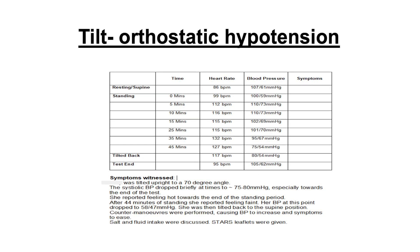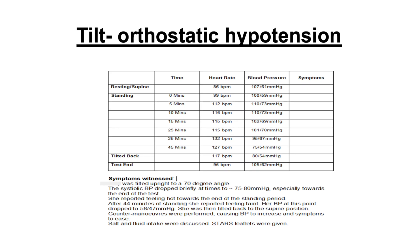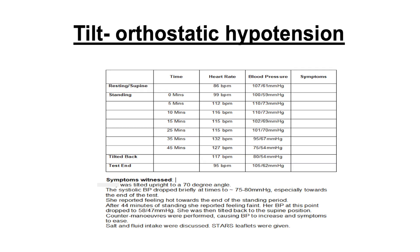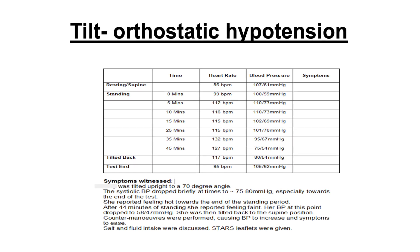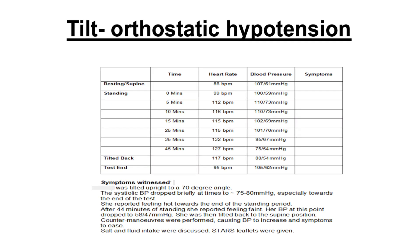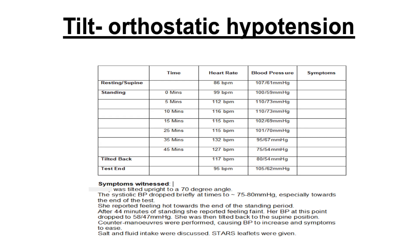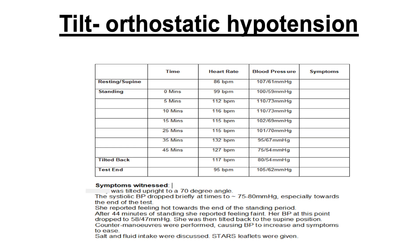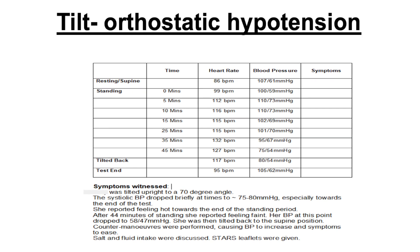This is a lady who came to us from the chronic fatigue service and had been told she had chronic fatigue and that dizziness was part of her symptoms and she had to put up with it. You might think she could get a diagnosis of POTS — her heart rate does go up when she stands — but her symptoms don't occur until right at the end of the tilt, where her blood pressure drops quite dramatically to 75 over 54. So her diagnosis is orthostatic hypotension. This is an example of making sure symptoms correlate with what you find.